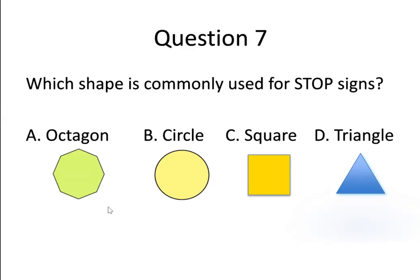Question number 7. Which shape is commonly used for stop signs? Option A, octagon. Option B, circle. Option C, square. And option D, triangle.